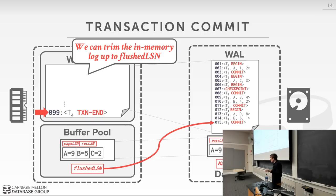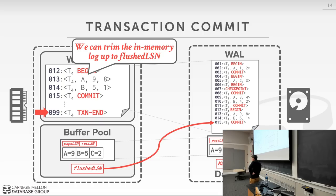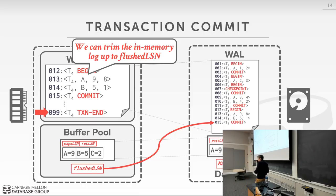In response to a question about who tracks LSNs: the log manager generates LSNs. You go to the log manager and say here's my update information, and it says okay, here's your log sequence number. Internally, the log manager has a counter incrementing by one. So log records from multiple transactions can be interleaved — transaction T4 might have LSN 12, T5 might have LSN 13.